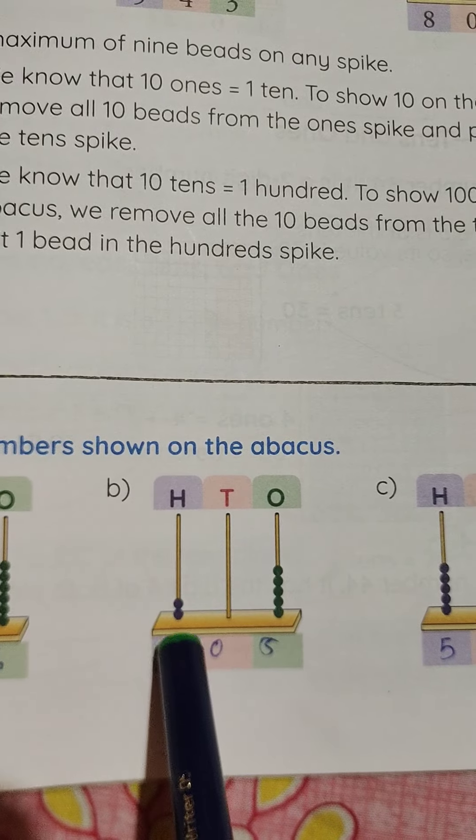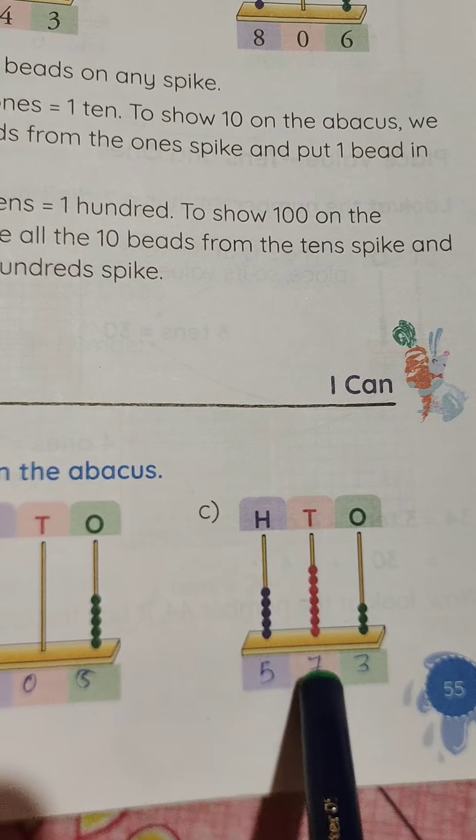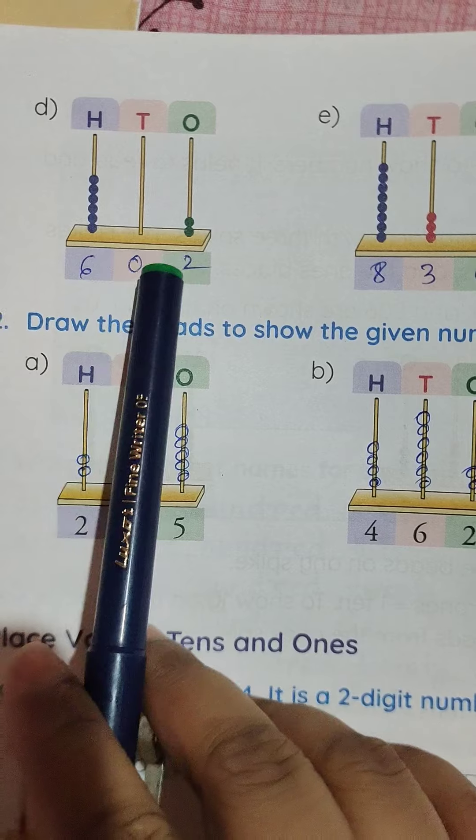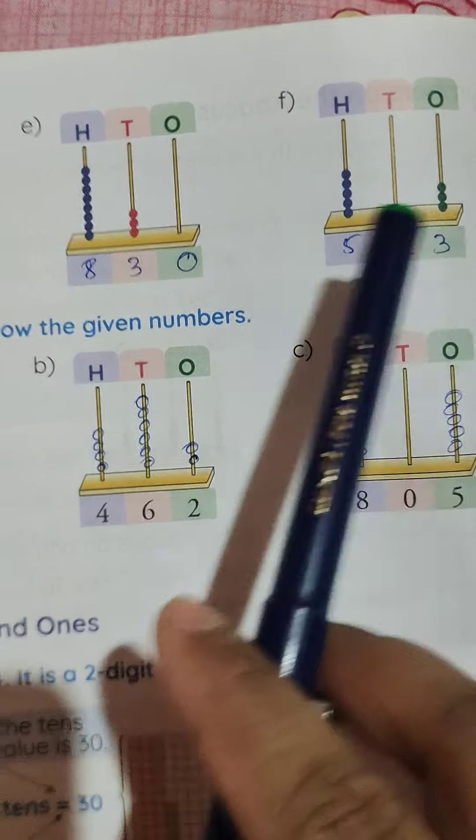And here, there is 2, 0, and 5. And this is 5, 7, and 3. Turn over the page. Here is 6, 0, 2, 8, 3, 0, and 5, 1, 3.